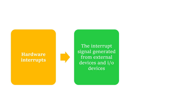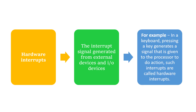First, we can see what is a hardware interrupt. A hardware interrupt is the signal generated from external devices and I/O devices. For example, in a keyboard, pressing a key generates a signal that is given to the processor to do an action. Such interrupts are called hardware interrupts.